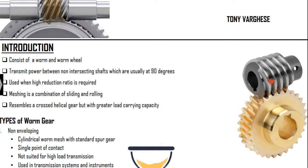Usually, the worm consists of threads — single start, double start, triple start, and so on. It is specified in terms of threads. Unlike the previous gears, we cannot have a number of teeth Z1 in the pinion. Here, the pinion will be specified using the number of starts Z1.